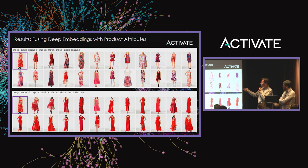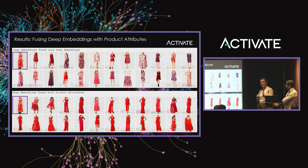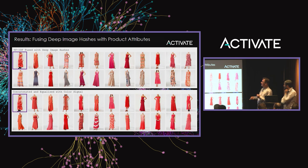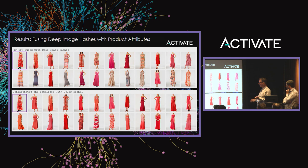Results: fusing fine-grained deep embeddings with coarser deep embeddings alone is not great. But taking 22,000-dimensional TF-IDF product attribute vectors and fusing them with deep embeddings from convolutional layers gives a pretty good result already. Fusing product attributes with deep image hashes is good too, though color is a little off — but applying the concatenation approach to color-correct gives one of the best models we have right now.